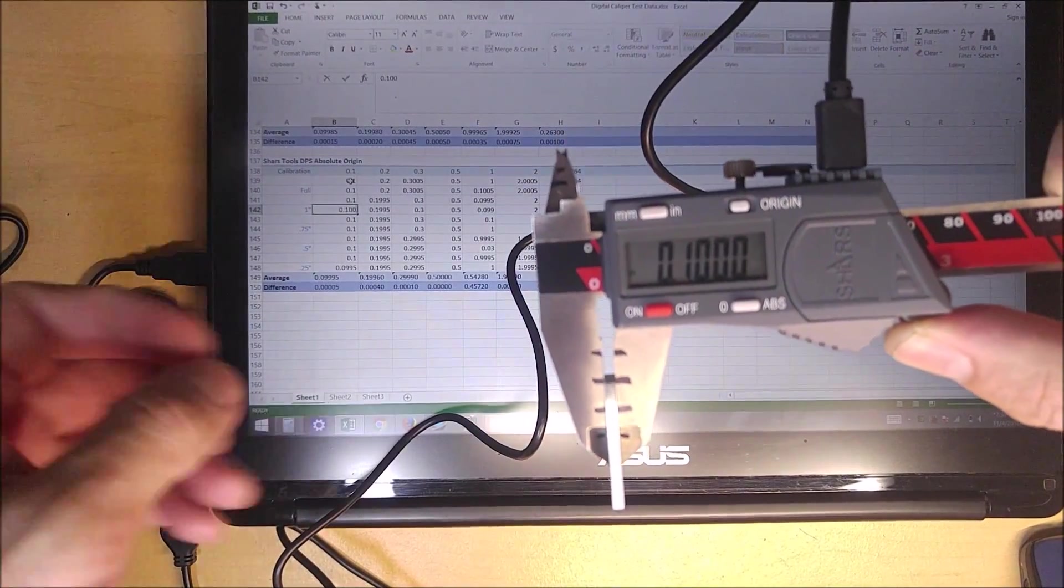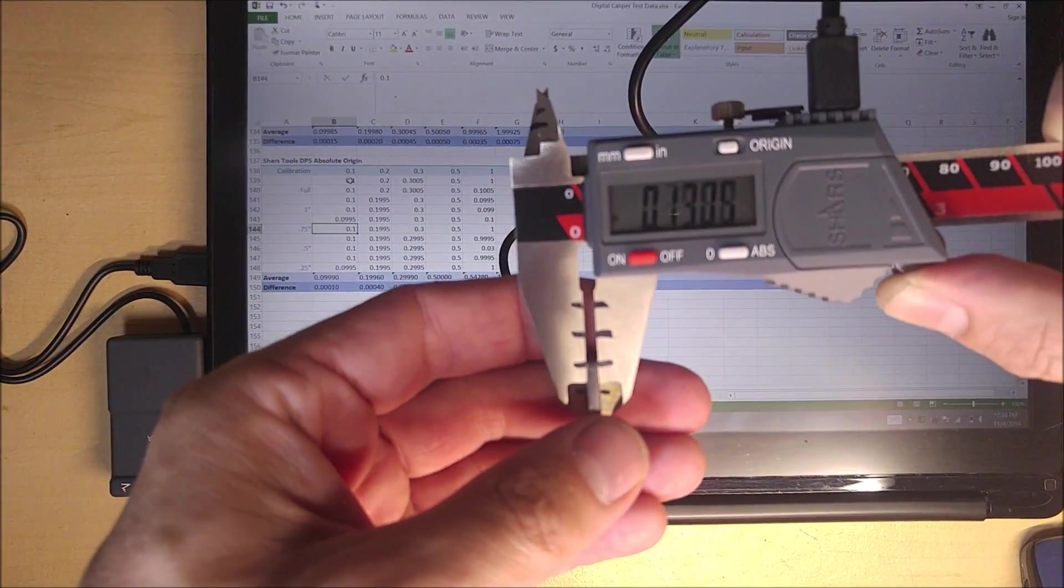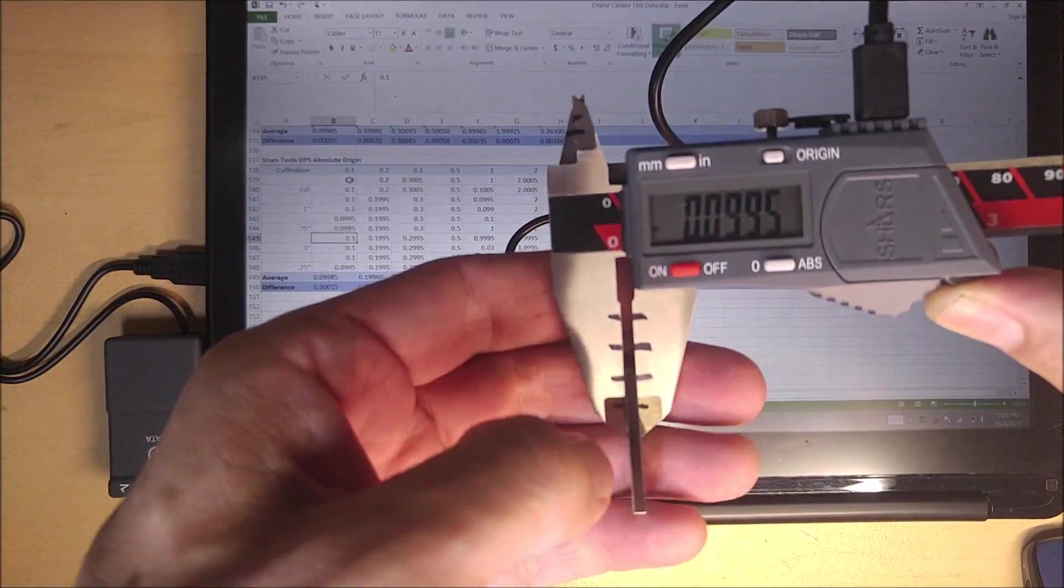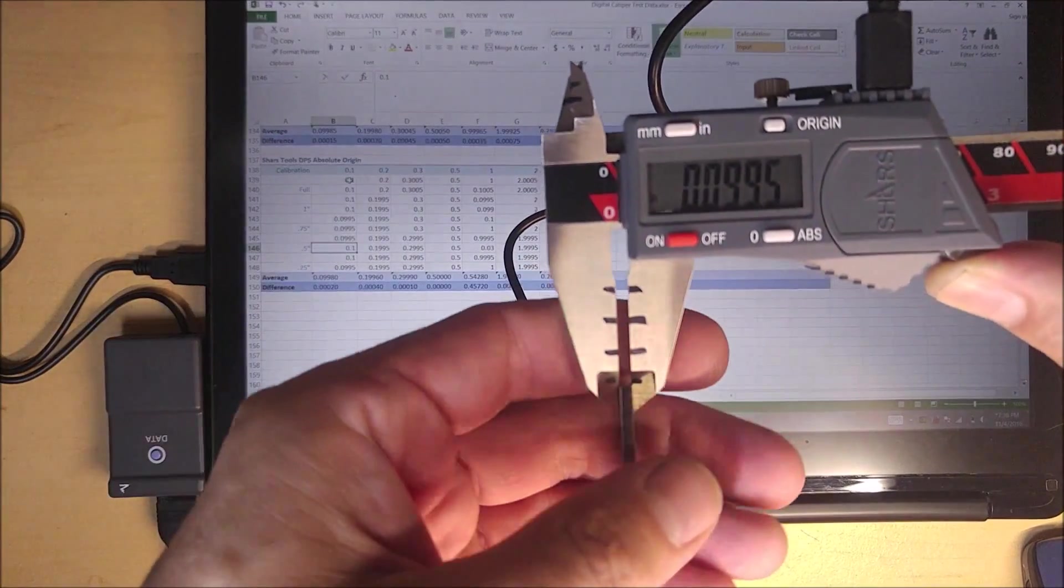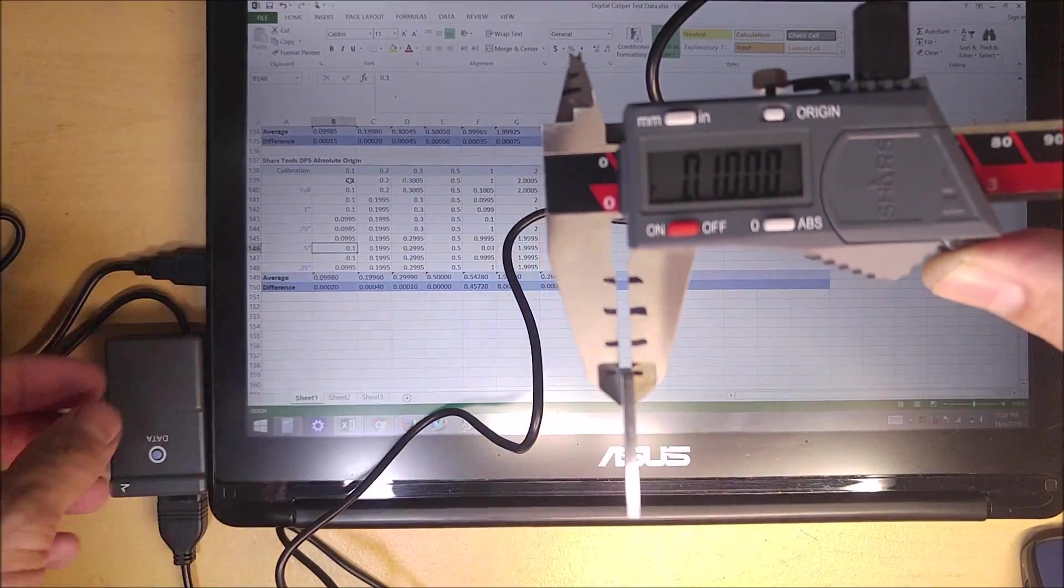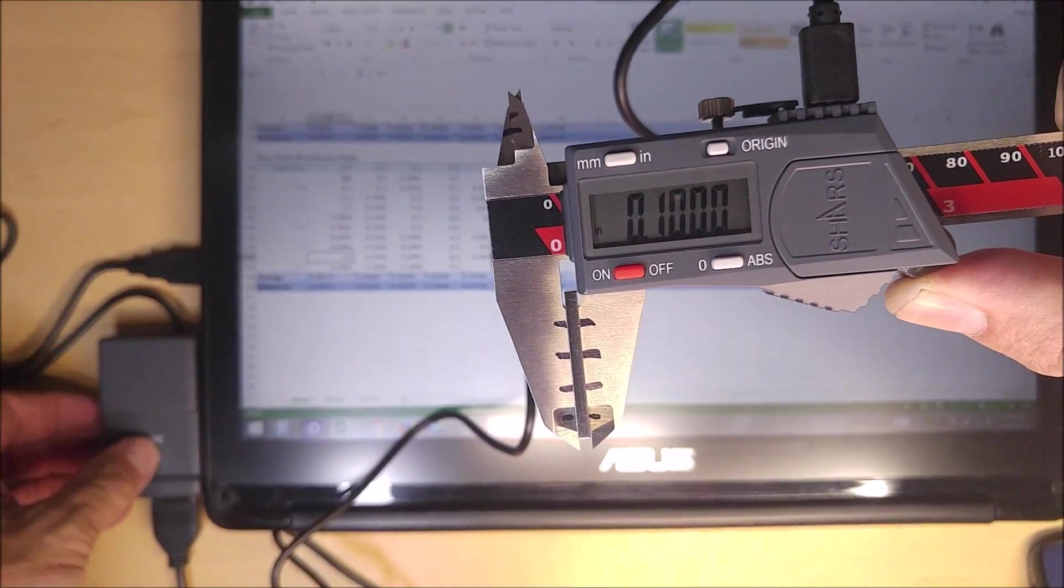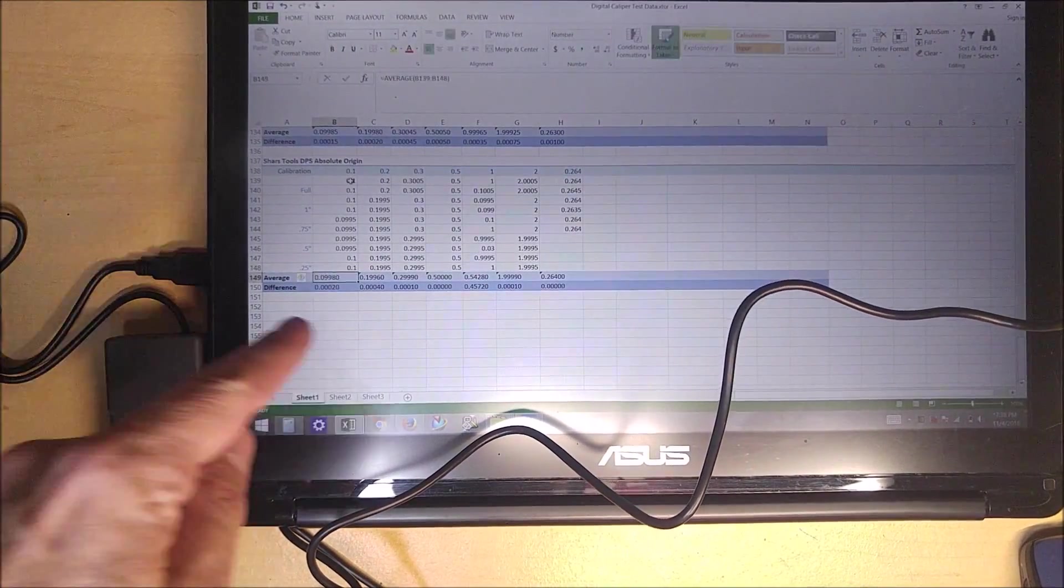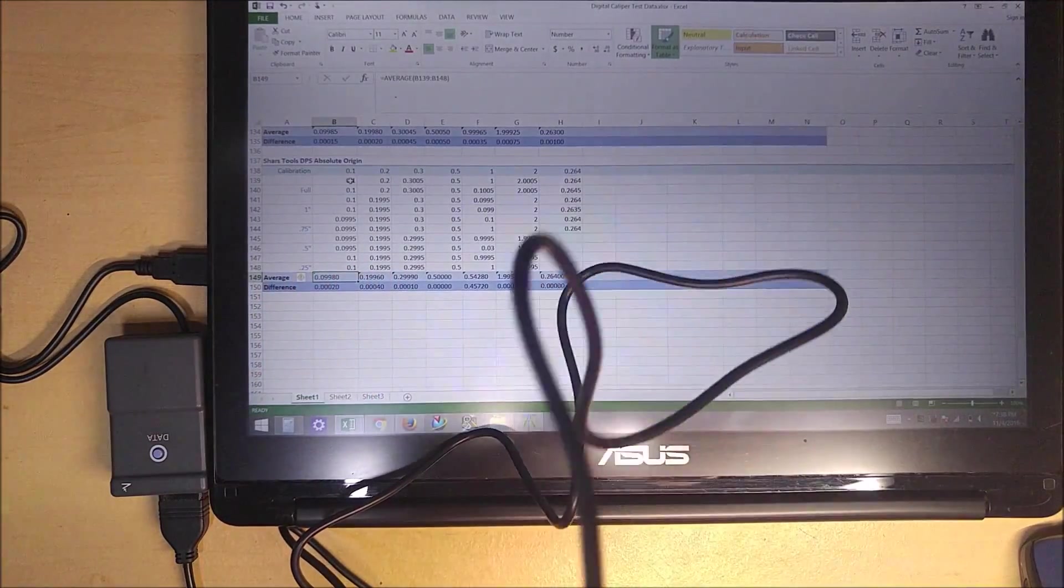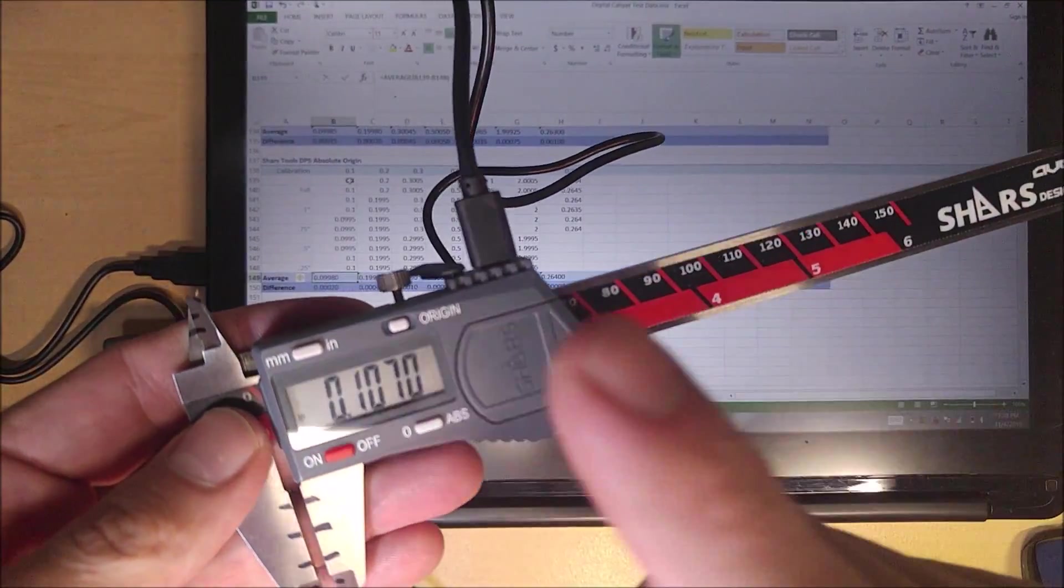And this is the same way I was doing my test measurements for the data accuracy test. Measuring at various points along the face of the caliper. And as you can see, when you press the button, it goes right into the table there. So very easy to do.